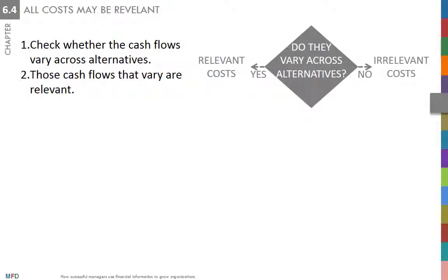In many operational decisions, relevant costs are all variable because fixed costs do not vary across alternatives and therefore they are irrelevant. Because people face so many decisions where fixed costs are irrelevant, they tend to think that the only relevant costs are variable costs. They are not.